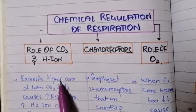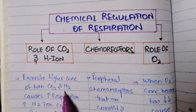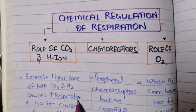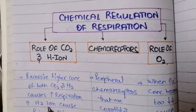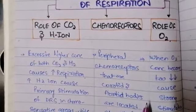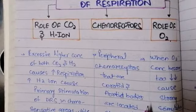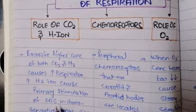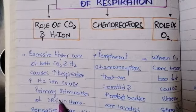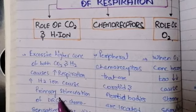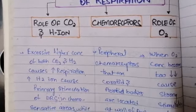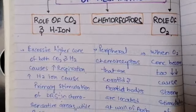When there is an excessively high concentration of both carbon dioxide and hydrogen in the blood, it causes increased respiration. Why? Because the hydrogen ion causes primary stimulation of the dorsal respiratory group of neurons — which we discussed in the neuronal mechanism — and these neurons are important for causing increased respiration. When there is increased inspiration, there will be an increase in the basic rhythm of respiration and activity in the chemosensitive areas.